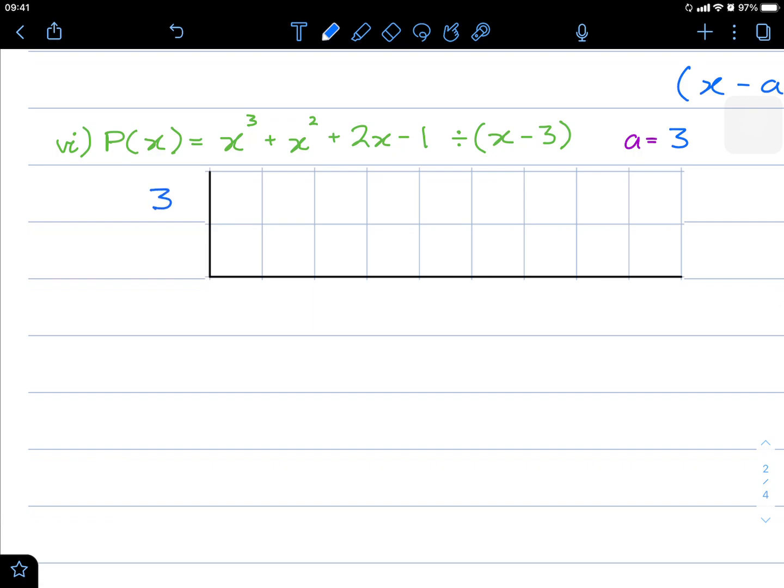So we place our 3 on the end, and we take the coefficients and place them into our box here: 1, 1, 2, minus 1.